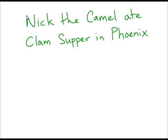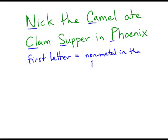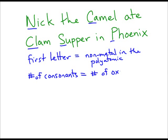When we're looking at this example, the capital letters — the N, the C, the Cl, the S, and the P — tell us what element is the nonmetal in our polyatomic. The number of consonants tells us the number of oxygens in the polyatomic. And the number of vowels gives you the charge.